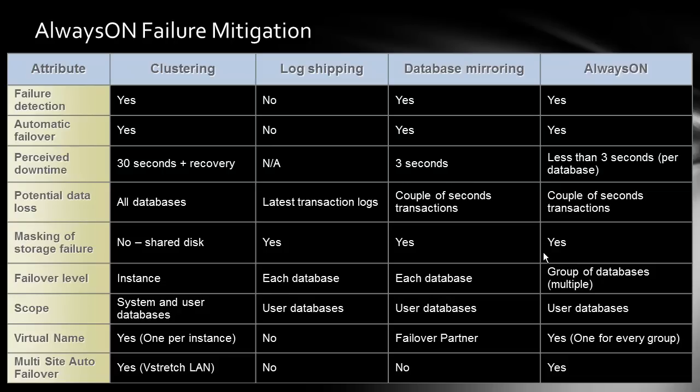In terms of failover granularity, in clustering you do it at the instance level — the whole instance fails over with all its databases. In log shipping, each database requires a manual step with no automatic failover. Database mirroring also operates at each database level, while Always On brings group failover, allowing a group of databases to fail over together. This is a big improvement that brings it close to what clustering provided before.